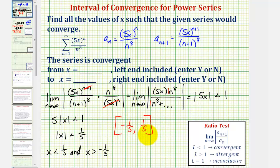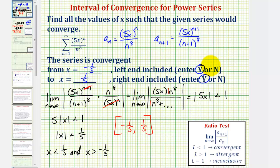Looking at our question, it asks whether the series is convergent at x equals negative one-fifth — the left endpoint is included, so the answer is yes. For x equals positive one-fifth, the right endpoint is also included, so the answer is yes again. I hope you found this helpful.